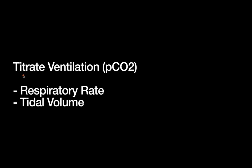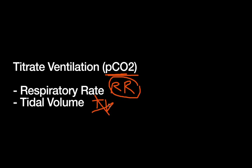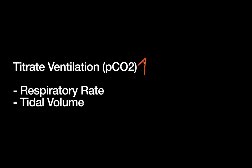For ventilation — managing the partial pressure of CO2 in the bloodstream — you have two options: respiratory rate (RR) or tidal volume. If your PCO2 is too high, you generally want to change your respiratory rate rather than your tidal volumes. Breathing more times per minute does less damage to the lungs than over-inflating them. High tidal volume ventilation can be really harmful to the alveoli, so if PCO2 is high and you have to choose, always titrate up the respiratory rate to preserve the alveoli.